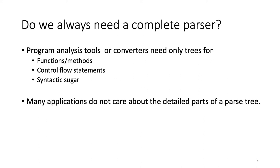But do we always need a complete parser? The answer is no. Program analysis tools or converters do not need a whole resulting tree from their parser. They need only subtrees for specific program constructs, such as functions, methods, control flow statements, or syntax sugar. Moreover, they do not care about the details of the tree. For example, when you want to measure the complexity of each function, you only need trees for functions and control flow statements. The tree for control flow statements contains subtrees for expressions, but we don't care about the subtrees for the expressions.